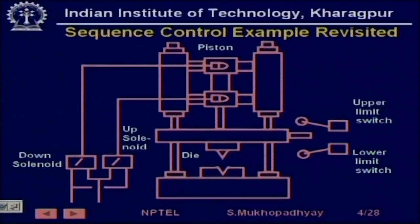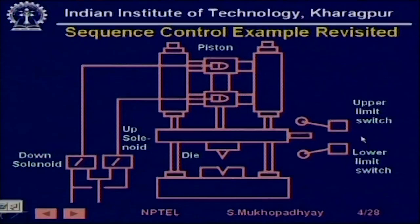Before we use timers and counters, we want to motivate them. So we take a second look at our previous example of the die press. Here is the die press where the piston moves the die up or down depending on whether the up solenoid or the down solenoid is activated, which directs hydraulic power upward or downward to the piston. There are two sensors — the upper limit switch and the lower limit switch — which sense the end positions of the die.